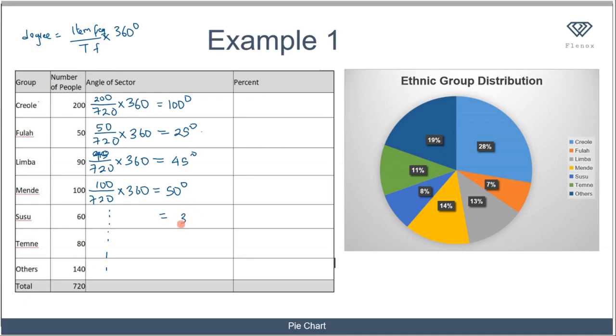When you sum up all these degrees together, if you solved this correctly, you should get a total of 360 degrees. Now if you look at this pie chart, this represents exactly what you have here.